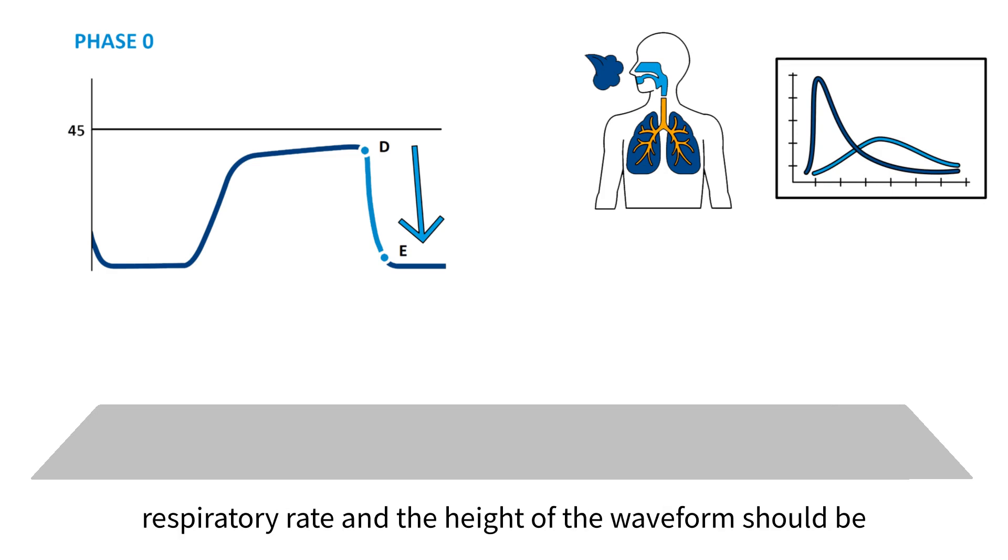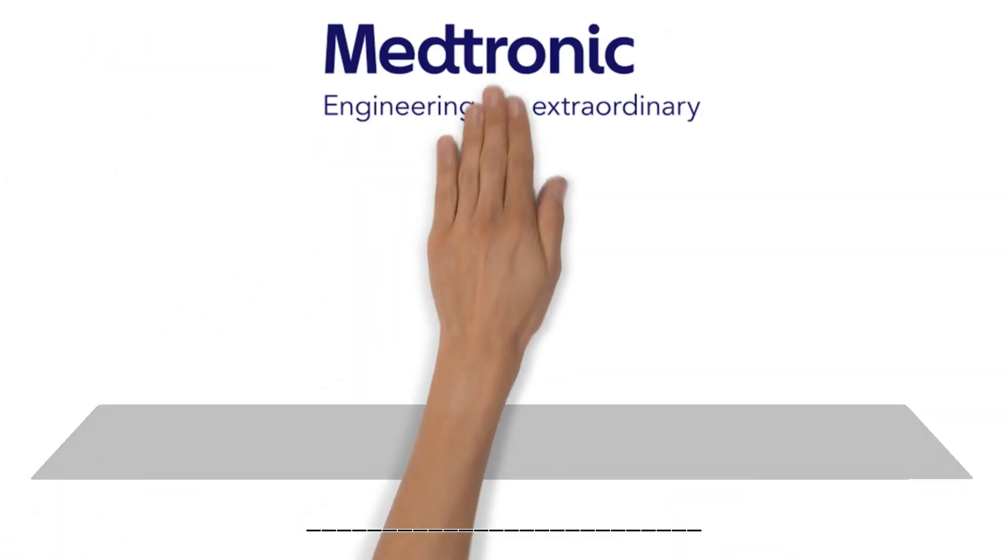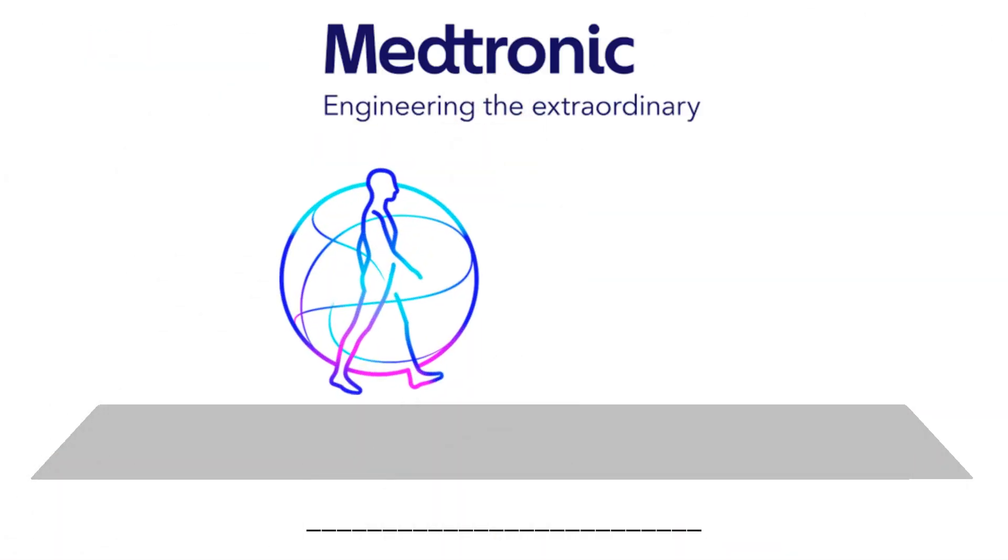The height of the waveform should be between 35 to 45 millimeters of mercury.